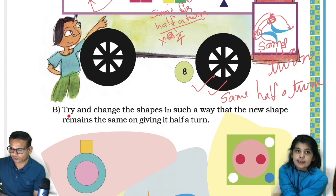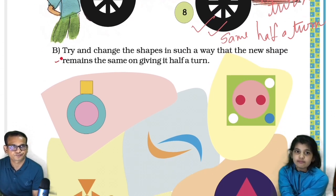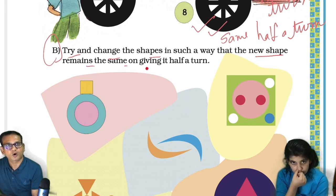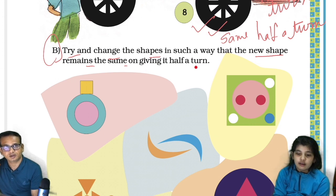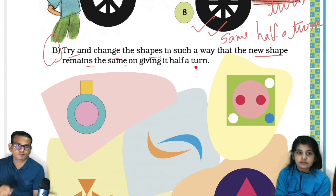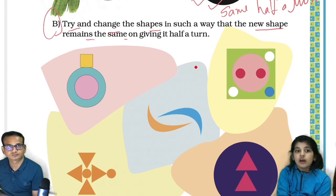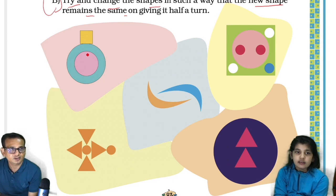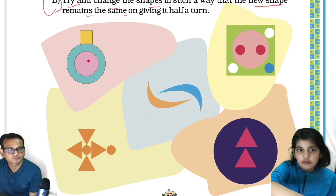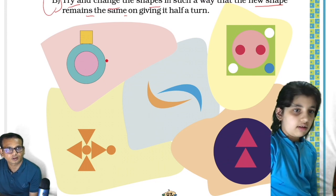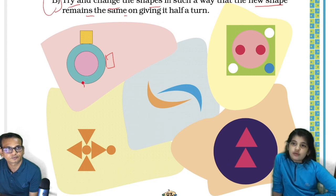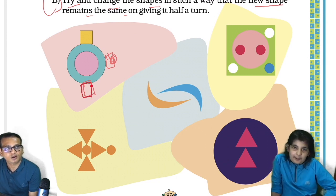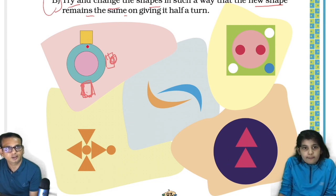Now we will see point B: try and change the shapes in such a way that the new shape remains the same on giving it a half turn. Tell me — in this blue one, just put four more squares to change the shape. After a half turn, one square here and one square here. We just need to put one yellow box here and one square box here, and then after a half turn it will be the same.